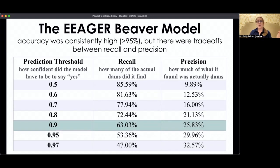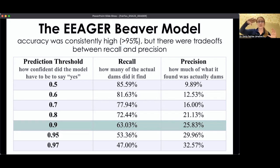However, when we evaluated how good the model was, accuracy was always super high — pretty much over 95% for everything. But a caveat is that beaver dams are a fairly rare landscape feature; there aren't a ton of them in an area. So if you give it a large search area, even if the model said none of this is beaver dams, it would still be like 80 to 85% correct, even if there were beaver dams in that image. So accuracy alone was not a good assessment.